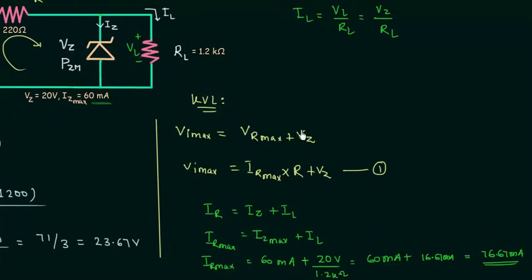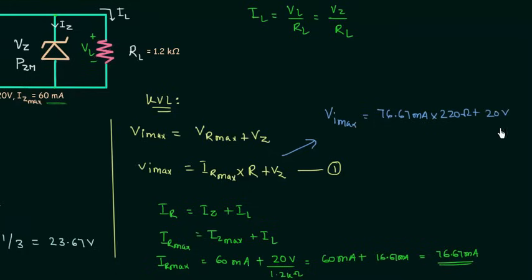And this is the value of IR max. Now I will put this value in equation 1. From equation 1, VI max is equal to 76.67 milliamps multiplied by R. R is equal to 220 ohms, plus VZ. VZ is 20 volts. When you solve this, you have 16.867 volts plus 20 volts. And finally the maximum value of input voltage is equal to 36.867 volts.